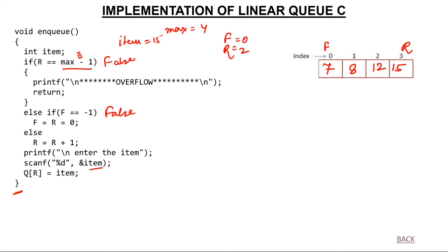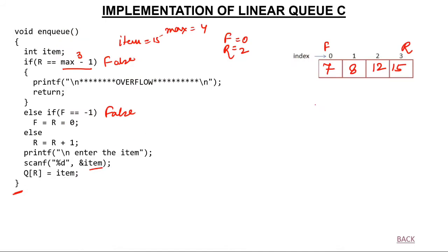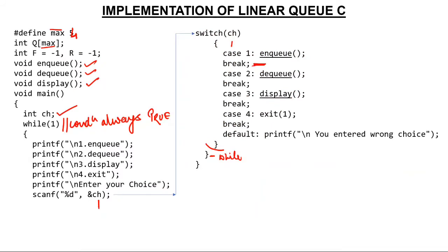Pressing 1 again: now rear is 3. Checking: is rear equal to max minus 1? Max minus 1 is 3, and rear is 3 — yes, they are equal. Condition is true, so we print 'overflow — no more space' and return. The queue is full. Break takes us out of switch; while condition is always true so we stay in the loop.